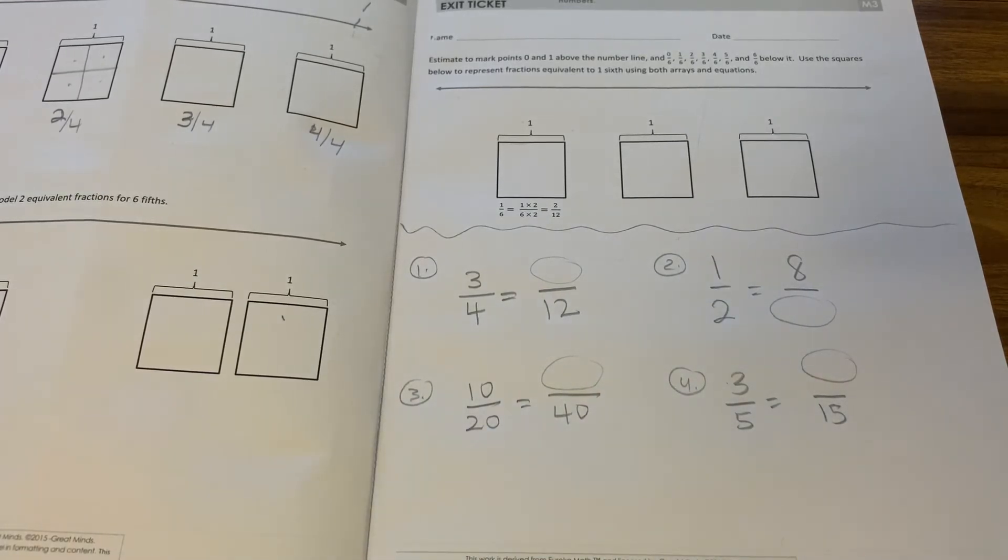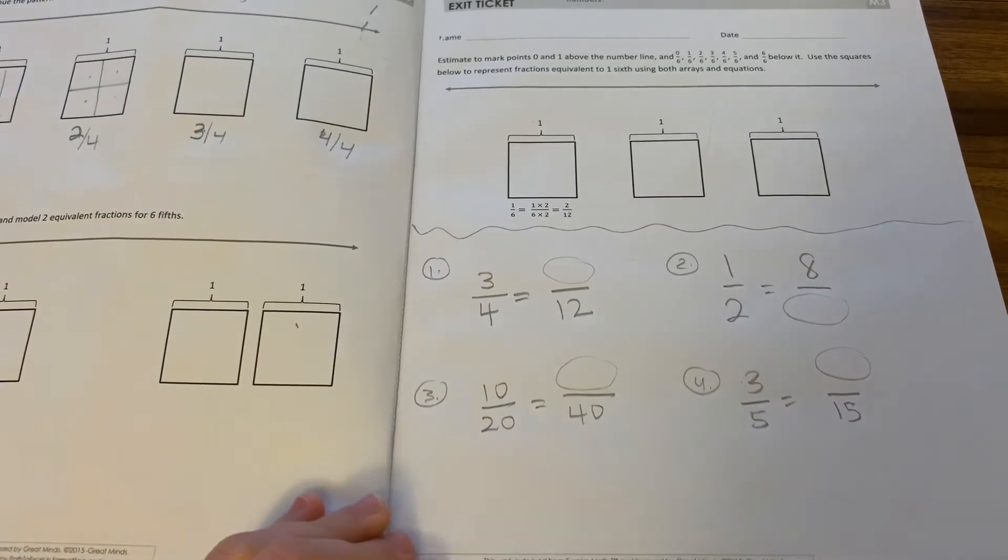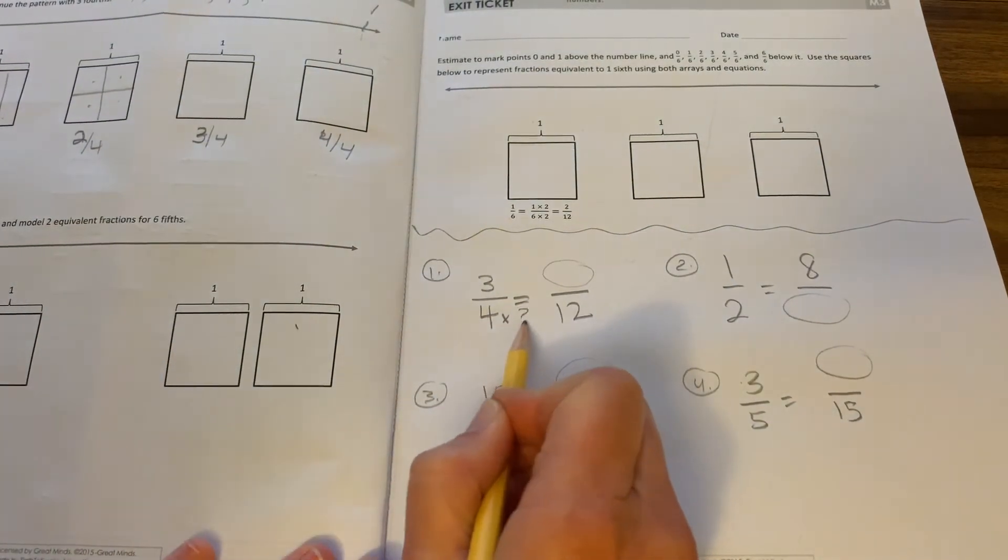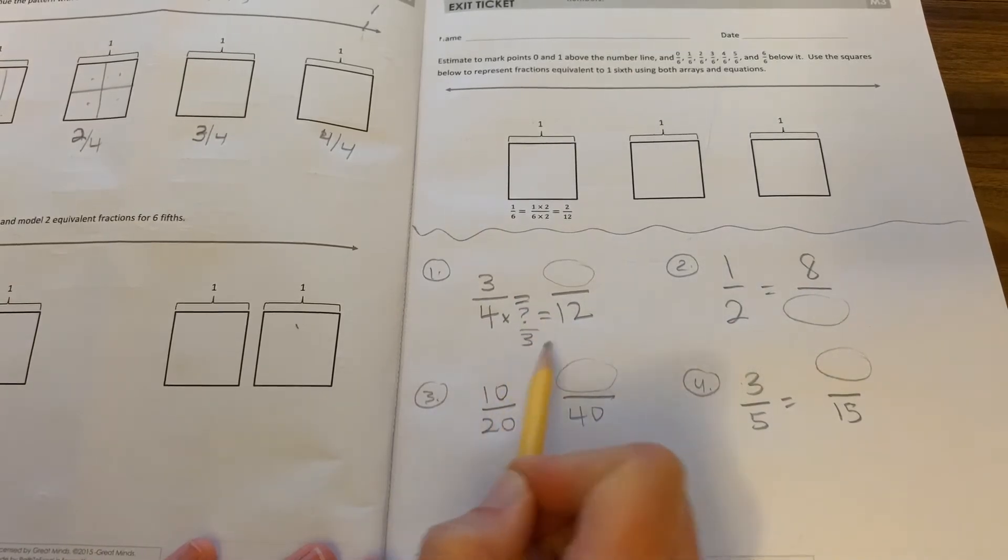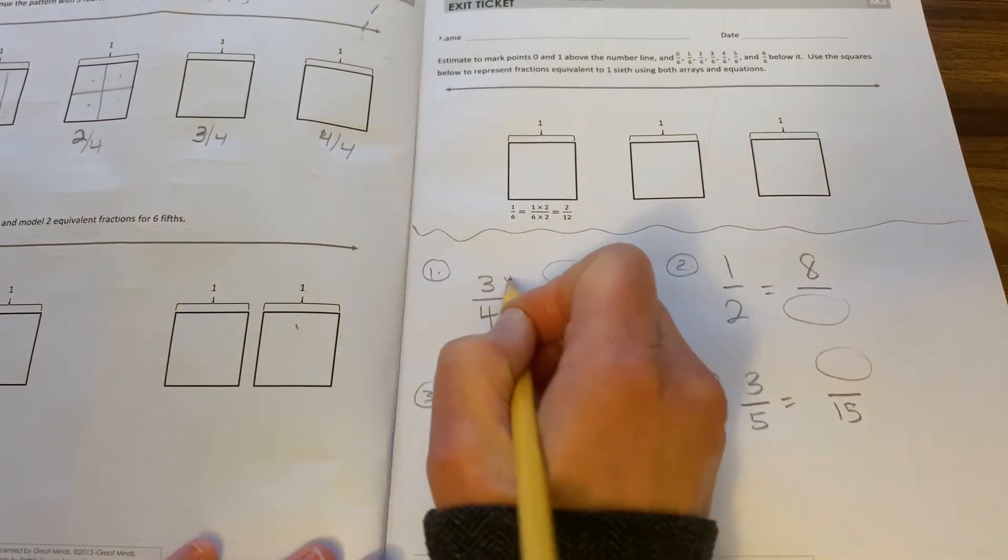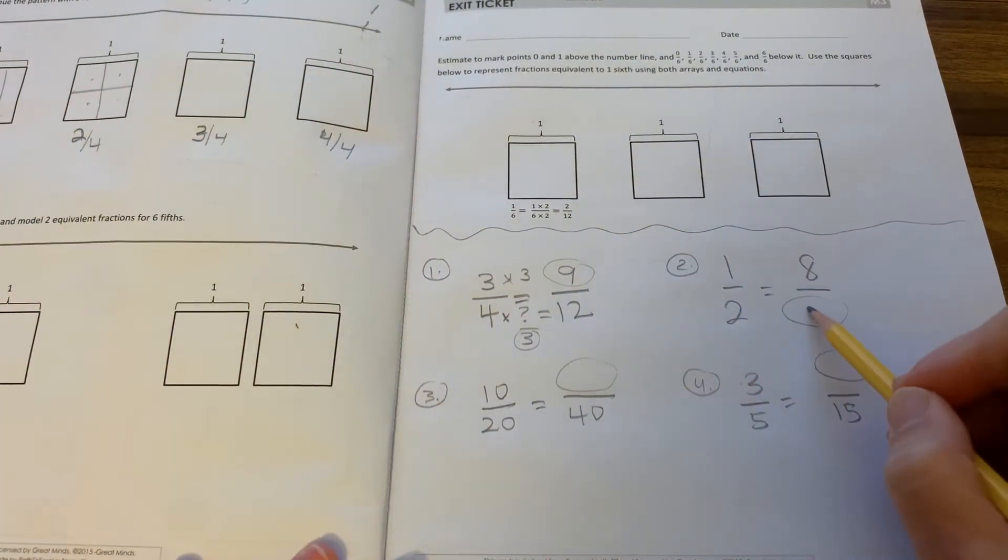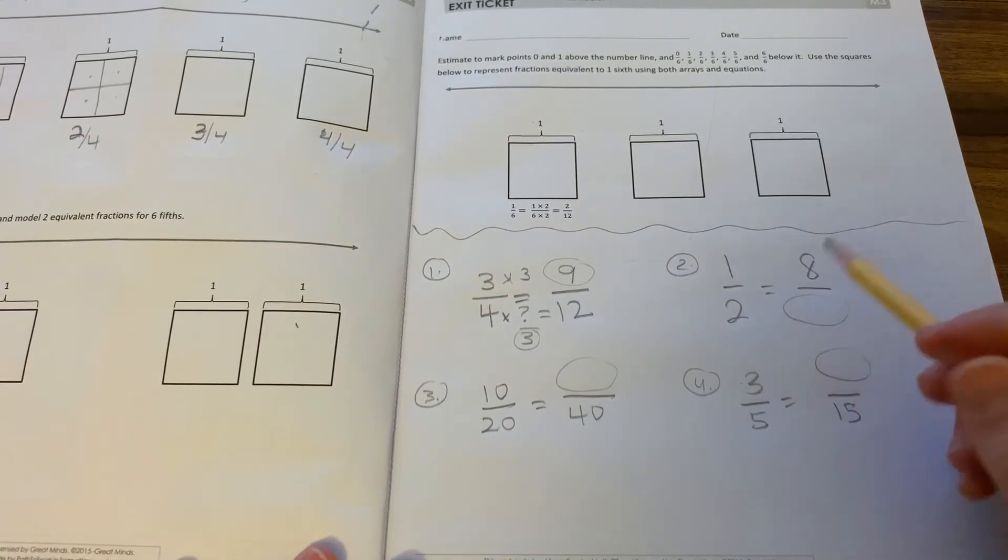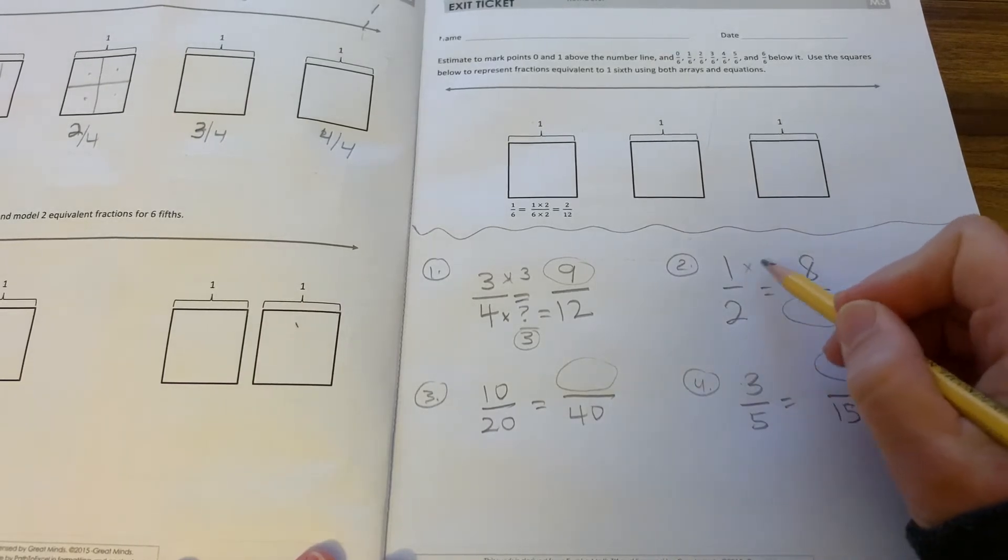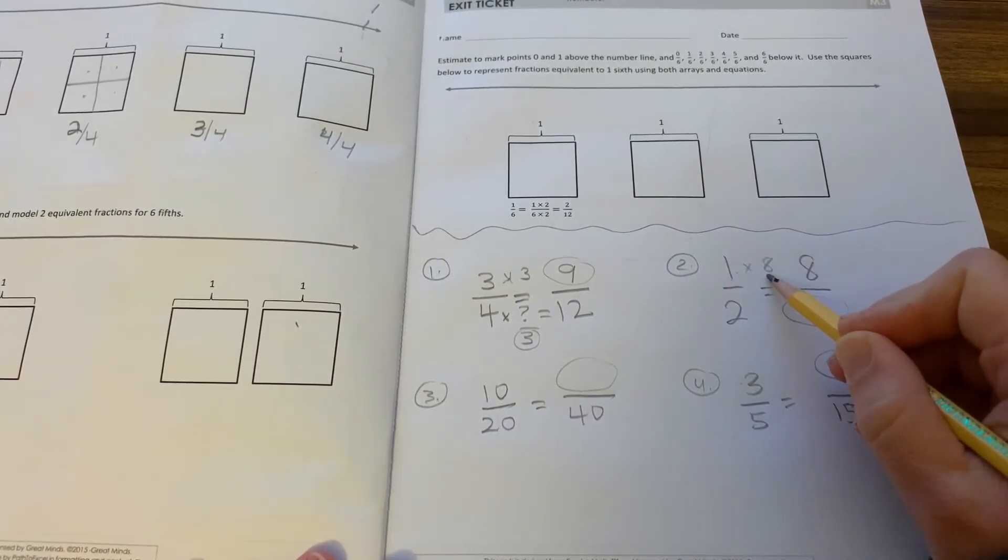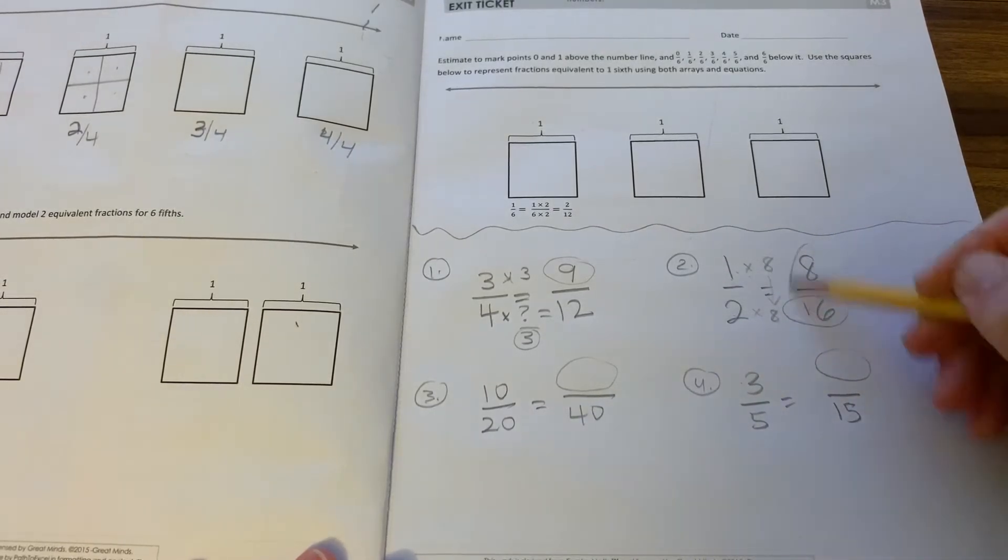Okay. If you're continuing to watch, it means you already did these by yourself. So, let's figure out these equivalent fractions. So, I have to figure out four times what equals 12? Four times three, that's right. So, whatever I put at the bottom, I also put at the top. Three times three is nine. Number two. What times one is eight? The answer is eight. So, one times eight is eight, and whatever I do to the numerator, I do to the denominator. Two times eight is 16. So, these are equivalent fractions.